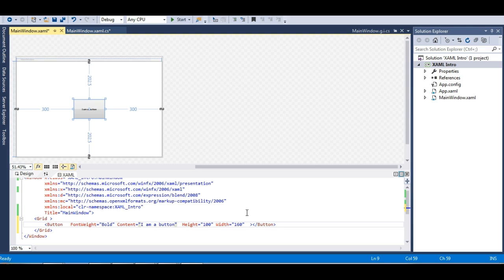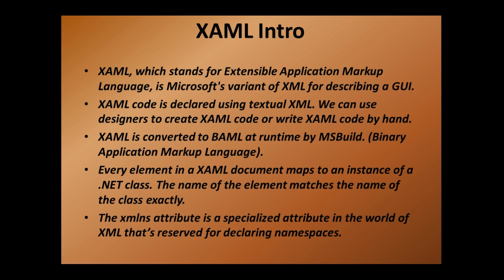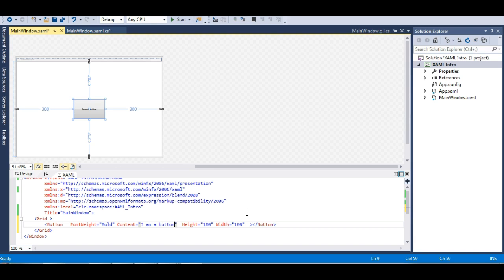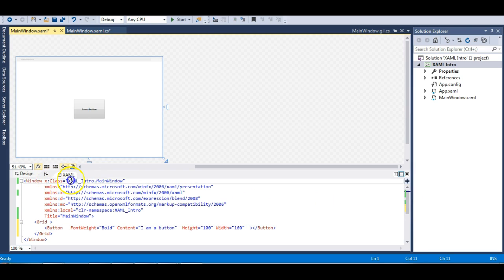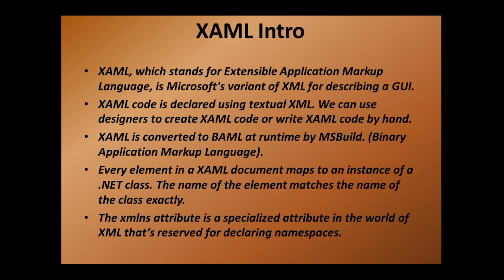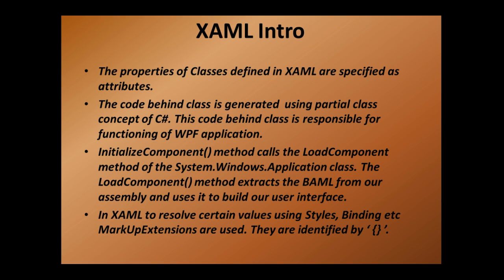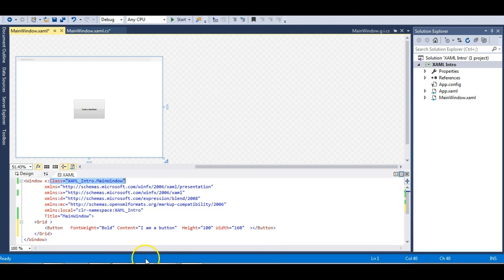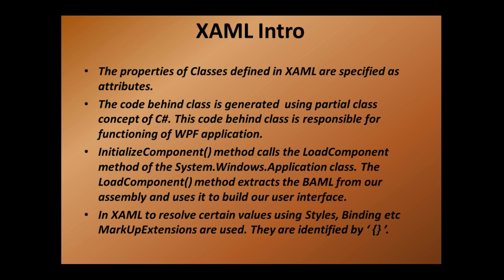Markup extensions are used for binding, DynamicResource, StaticResource, ThemeDictionary, etc. They are identified by curly braces, and the values inside are evaluated at runtime. Instead of hard-coding values, you can specify them via markup extensions. Markup extensions provide a dynamic look and feel to controls. The slides also note that every element in an XML document maps to an instance of a .NET class, with the element name matching the class name exactly.